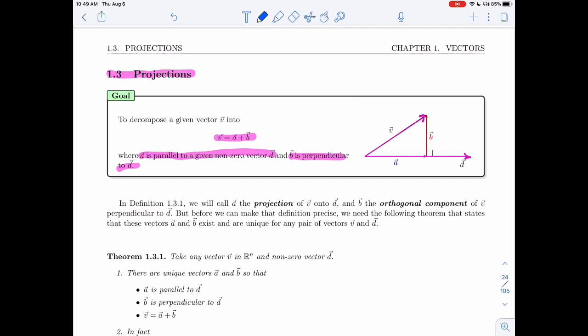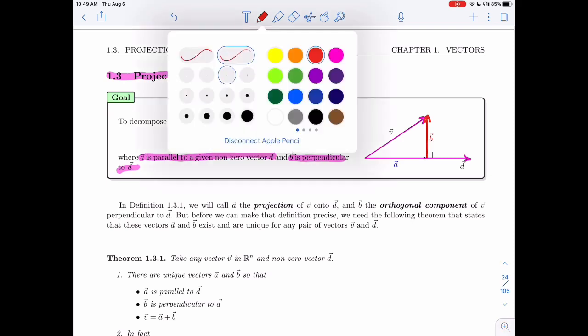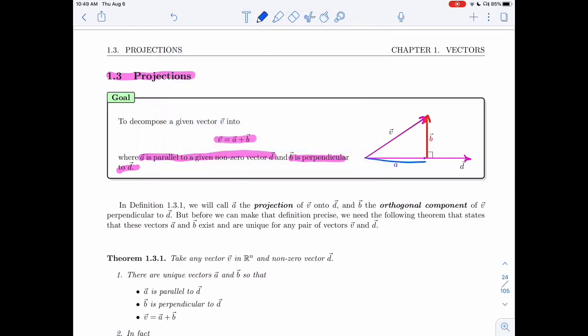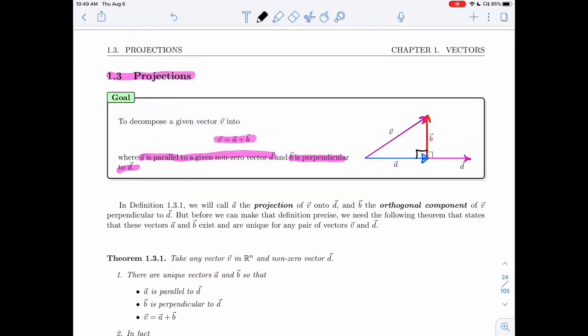From these two, I want to find a vector B that's perpendicular right here. And I want to find a vector A that's parallel like this. And the sum of A plus B should be V. So you get this right triangle right here. You get this right triangle of vectors here.